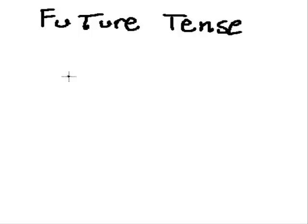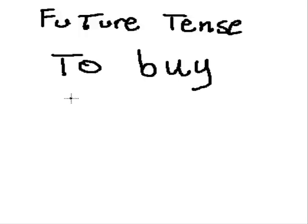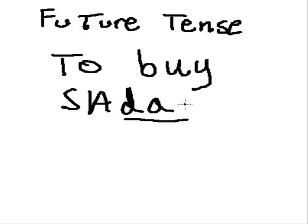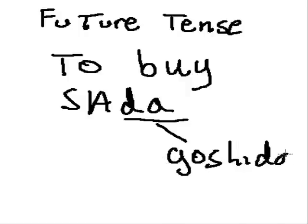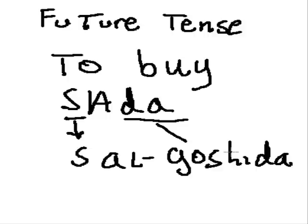The next word is to buy, and that word is sada. There's the da, so it becomes goshida. There's the a, it becomes an al. Drop down the s: salgoshida. To buy — sada — will buy: salgoshida. The a becomes the al.